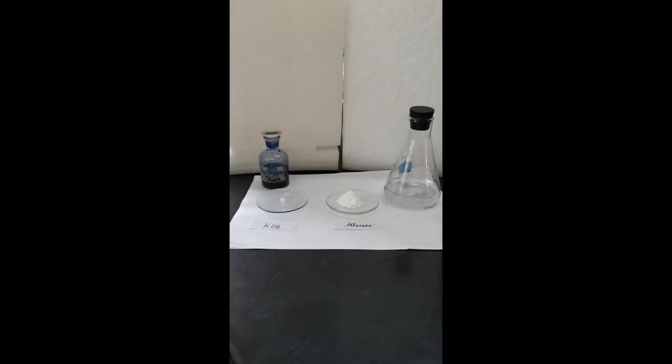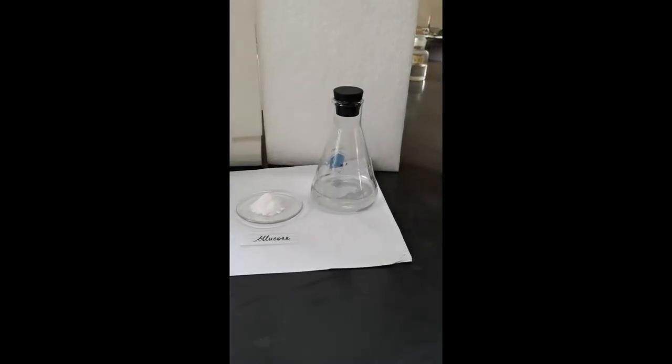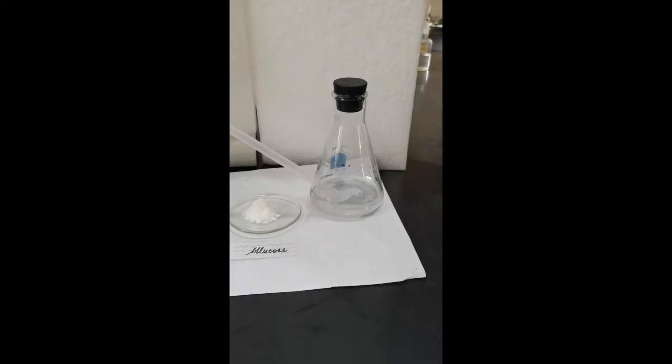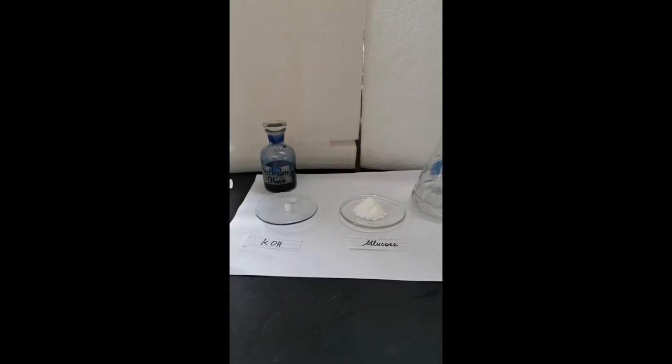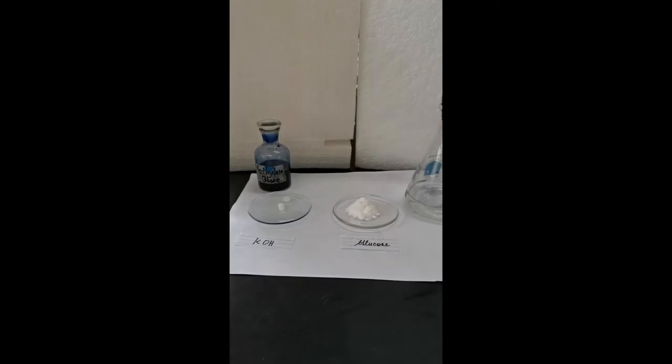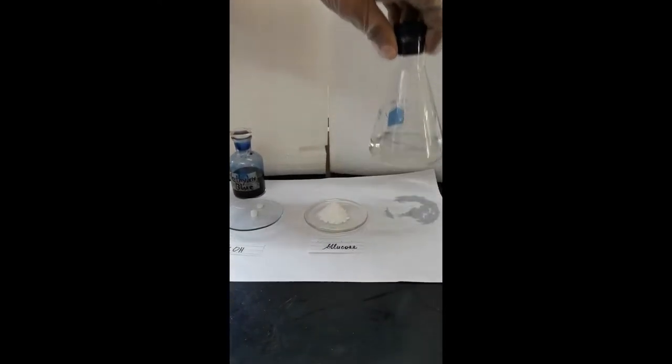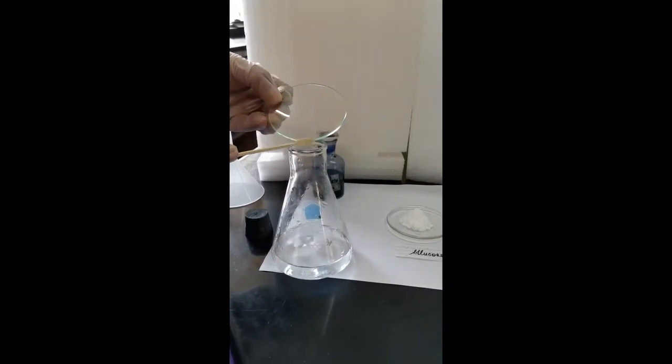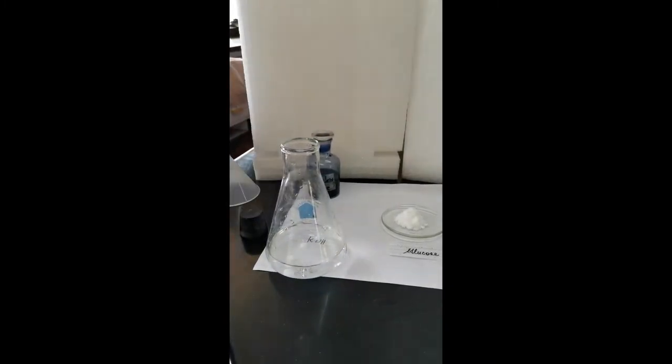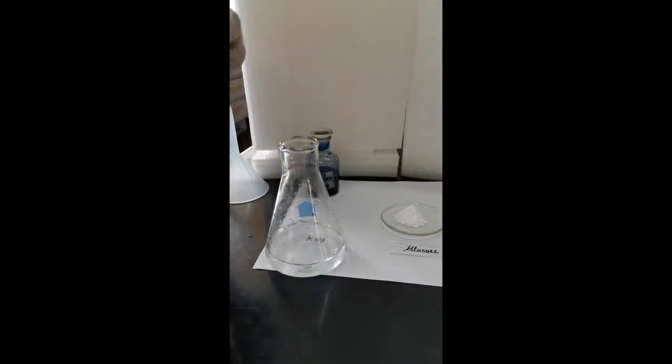In a 250 ml Erlenmeyer flask, place 75 ml of distilled water and then add 2 grams of potassium hydroxide pellets. Stir and swirl to dissolve the potassium hydroxide.